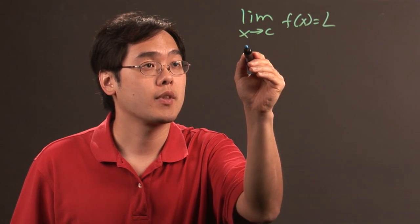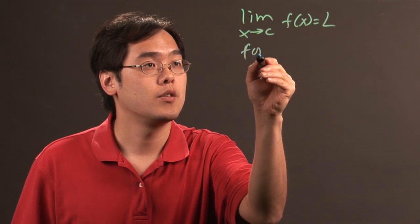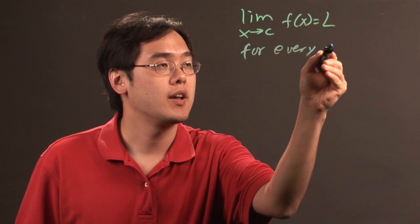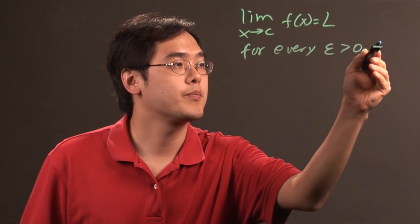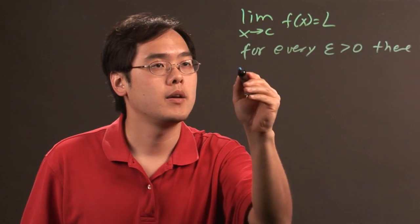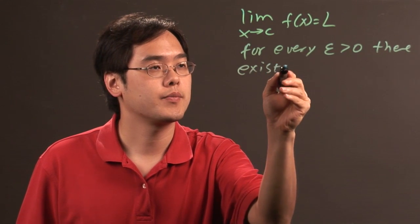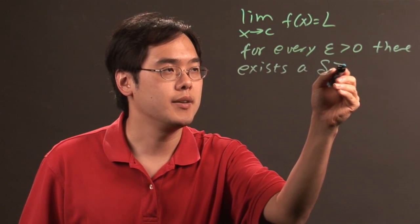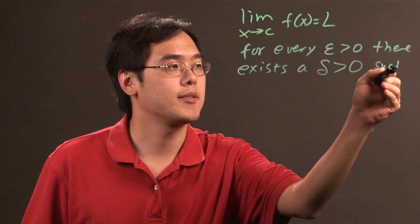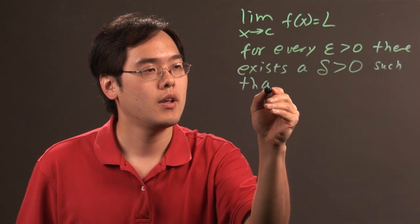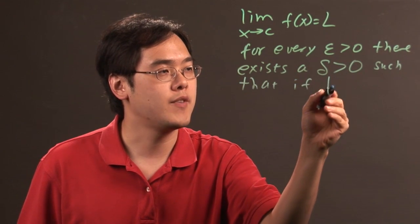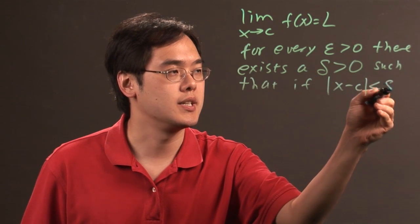For every epsilon greater than zero, there exists a delta greater than zero such that if the absolute value of x minus c is less than delta,